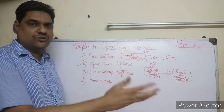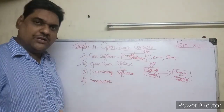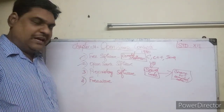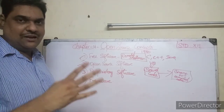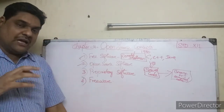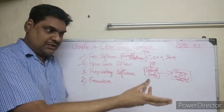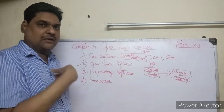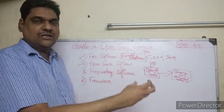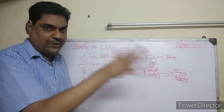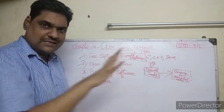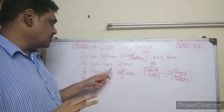Those four conditions, or four freedoms, mean that users are given rights over the source code. If a software follows those four freedoms, it qualifies as free software. The key idea is that users can use, study, modify, and redistribute the software freely.